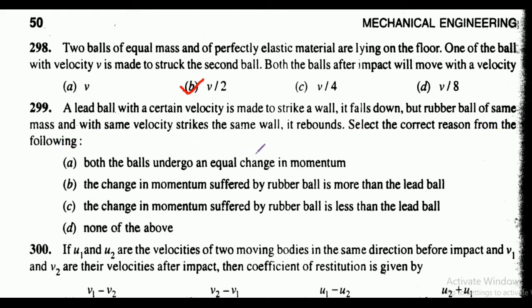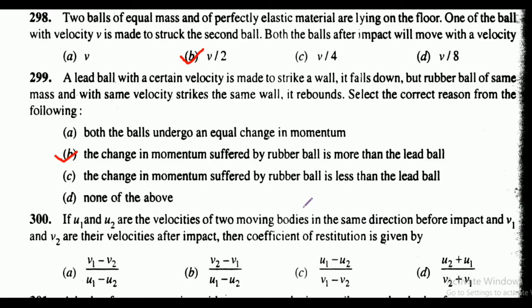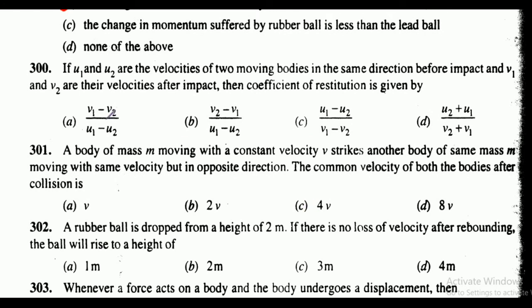Question 299: a lead ball strikes a wall and falls down, but a rubber ball of the same mass and velocity strikes the same wall and rebounds. The correct reason is — the change in momentum suffered by the rubber ball is more than the lead ball. The correct answer is option B.